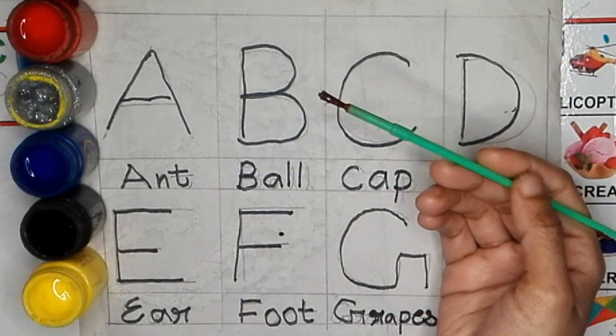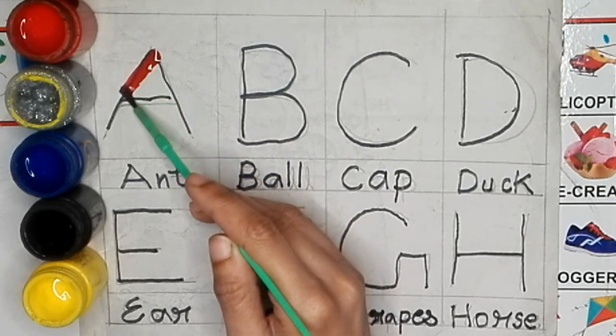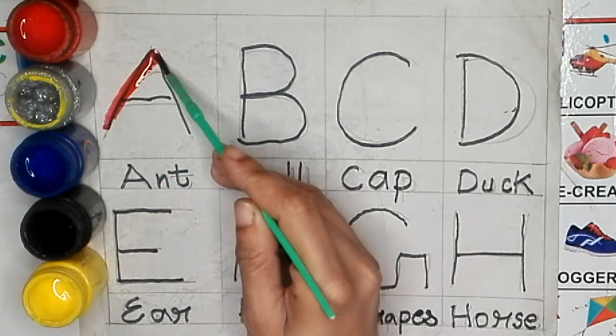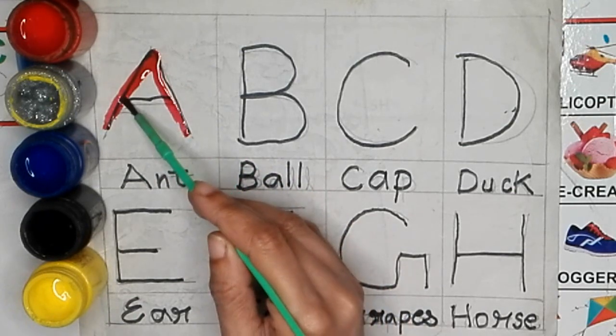Let's start to learn how to write ABC. A for Ant. A for Ant.